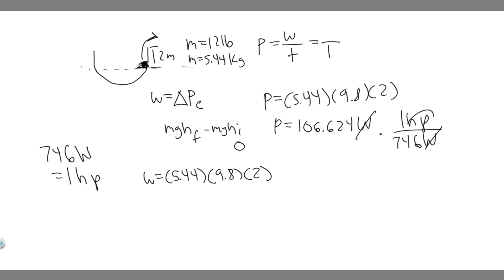We want it in horsepower, so divide by 746. So 106.624 divided by 746, you're going to get that it equals 0.1429, which is about 0.143 horsepower. So 0.143 horsepower, that's going to be your answer to this problem.